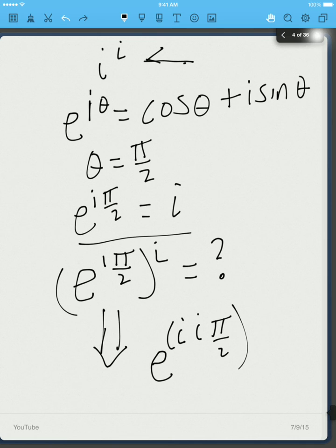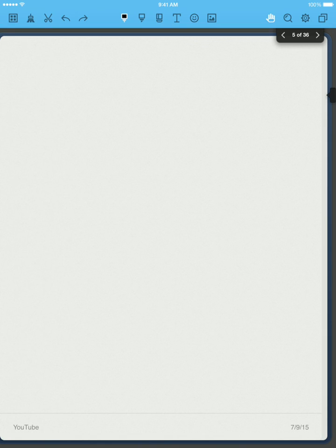Which of course is equal to e to the negative pi over 2, which is some number 0.2... But what's interesting is all of this is equal to i to the i.